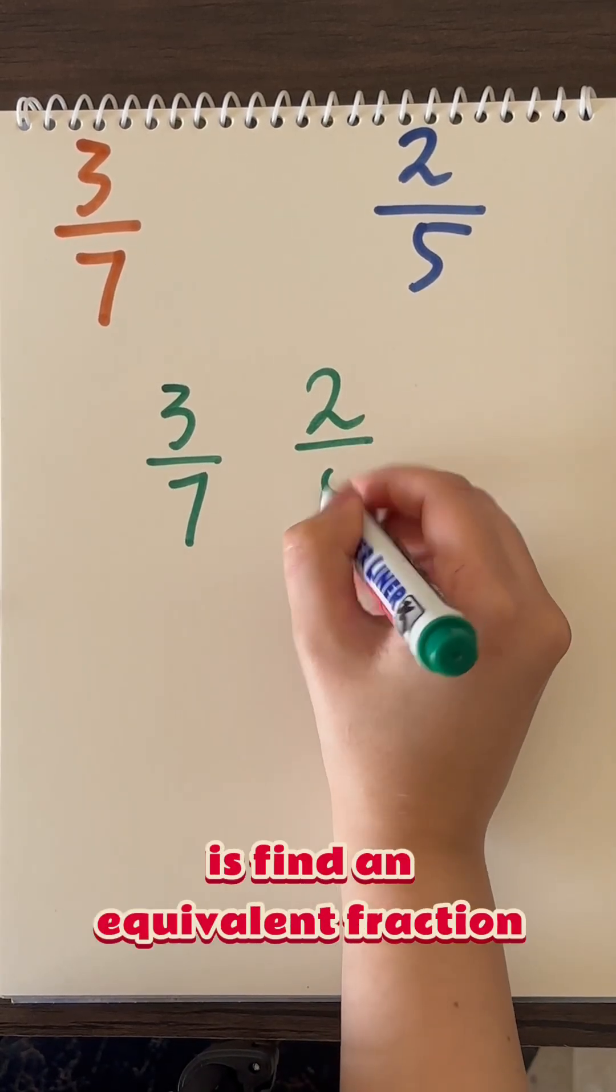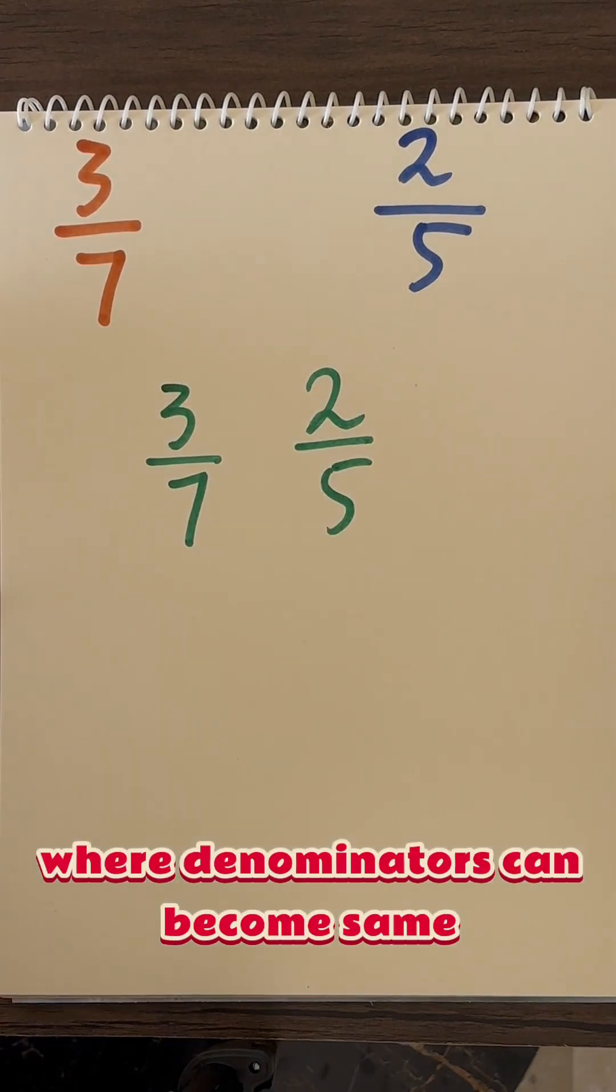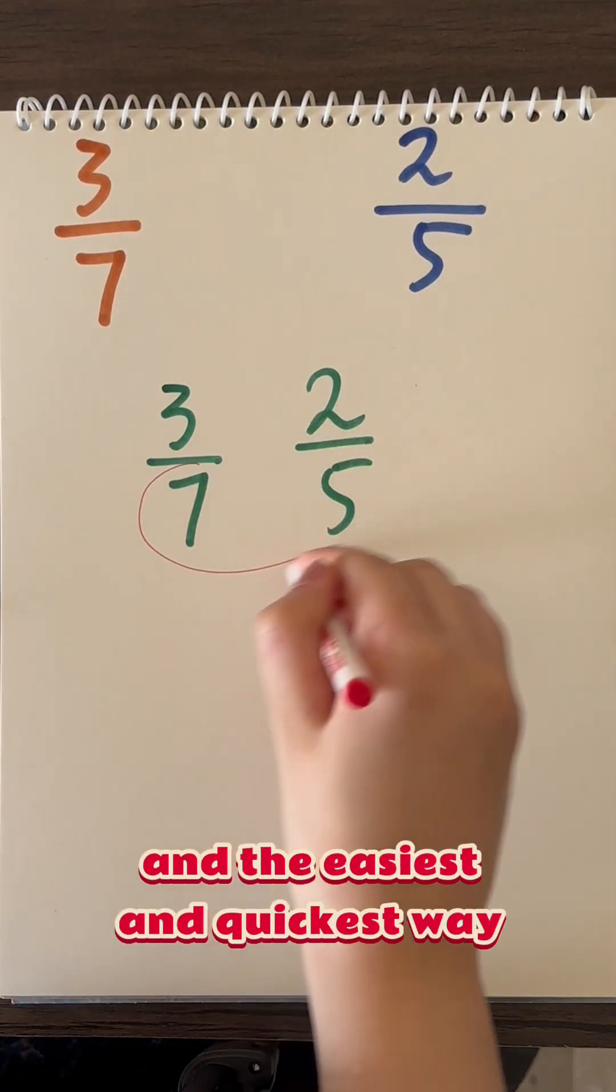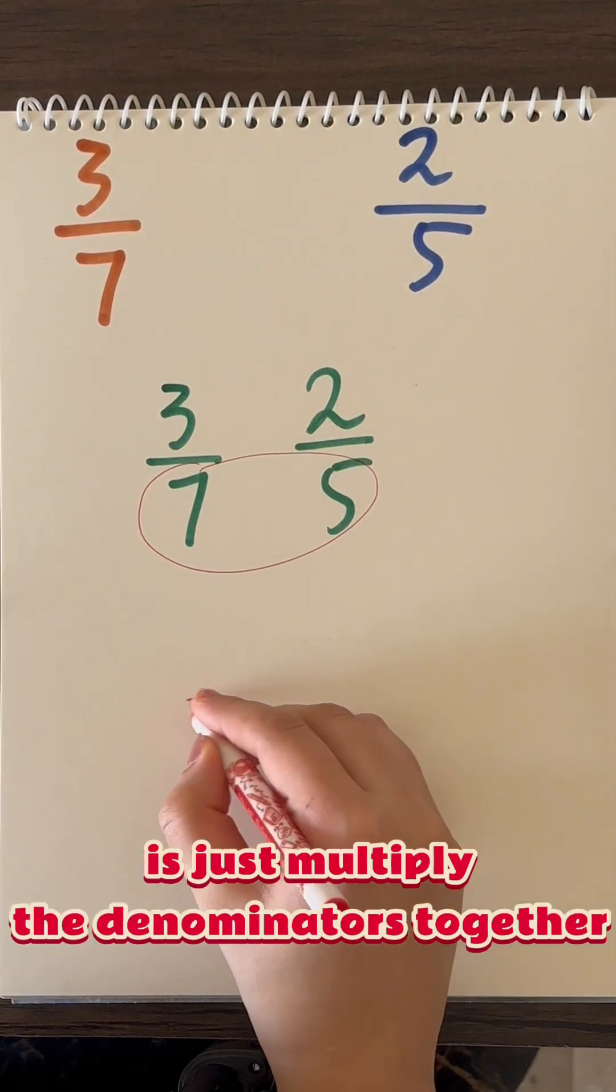So all we need to do is find an equivalent fraction where denominators can become same. And the easiest and quickest way is just multiply the denominators together.